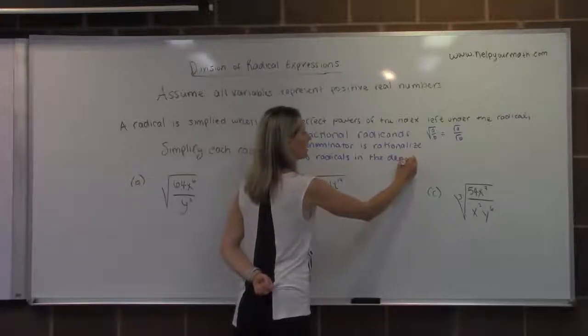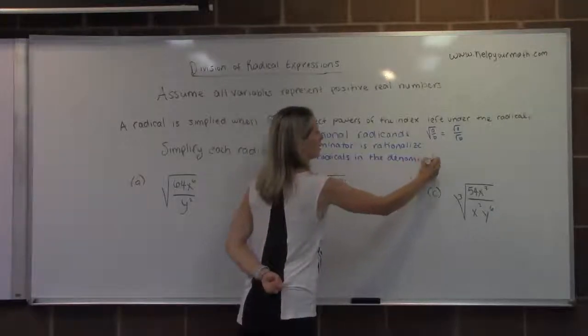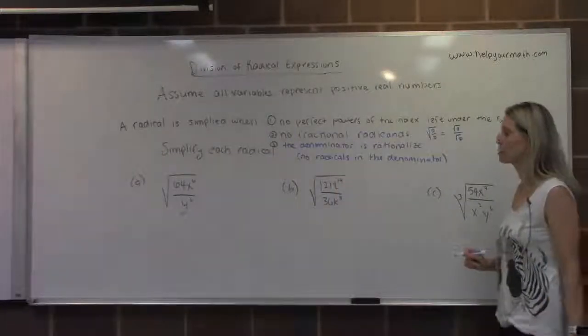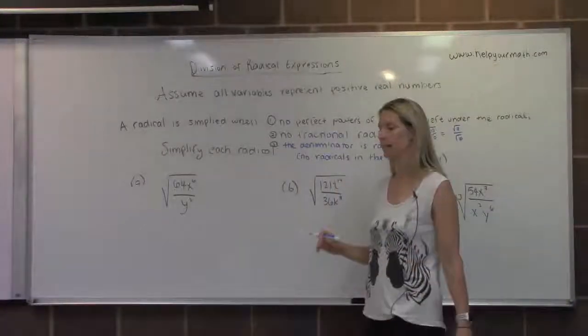Let's look at some examples using one technique for simplifying fractional radicands. In our first example, we have the square root of 64x to the sixth over y squared.